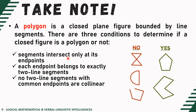Or you can also proceed with the second condition: each end point belongs to exactly two line segments only. Looking at the middle portion here, the point of intersection belongs to four line segments. So that means it does not satisfy the second condition.